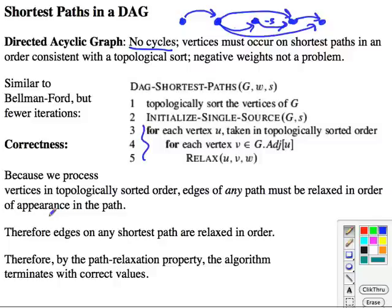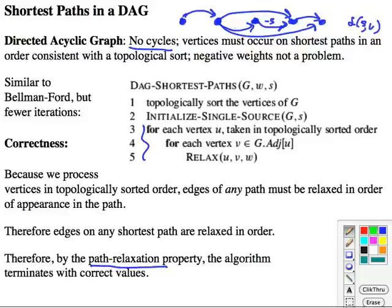So essentially, I've already made the argument for correctness because we process them in topologically sorted order. We're relaxing the edges of any path in the order of appearance in the path. Again, remember by the path relaxation property, if you relax the edges of any path in the order in which they appear in that path, then you must have the correct delta S,V distance at the end. And so that's what happens here. Each edge is relaxed in the order that they occur in the path because you're stepping through the vertices in that forward order. I will leave the complexity analysis of this algorithm to you. It's pretty easy. And we'll move on to an example.